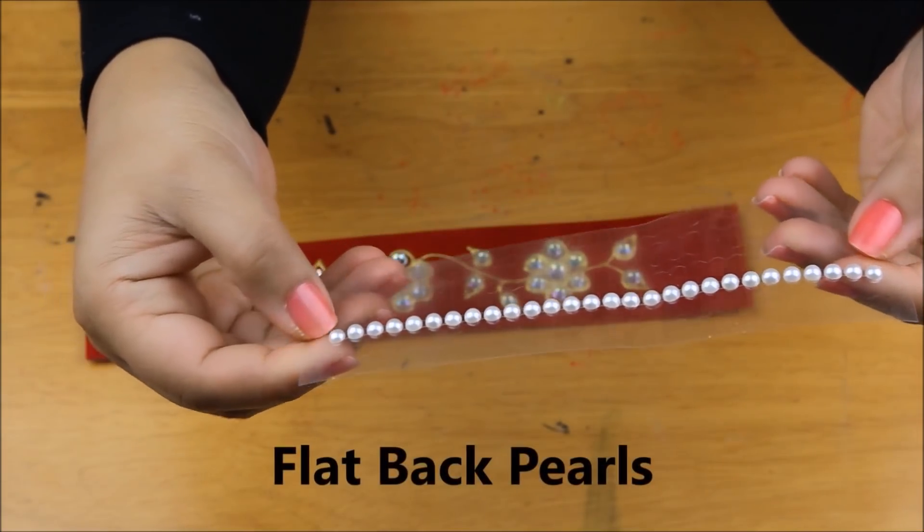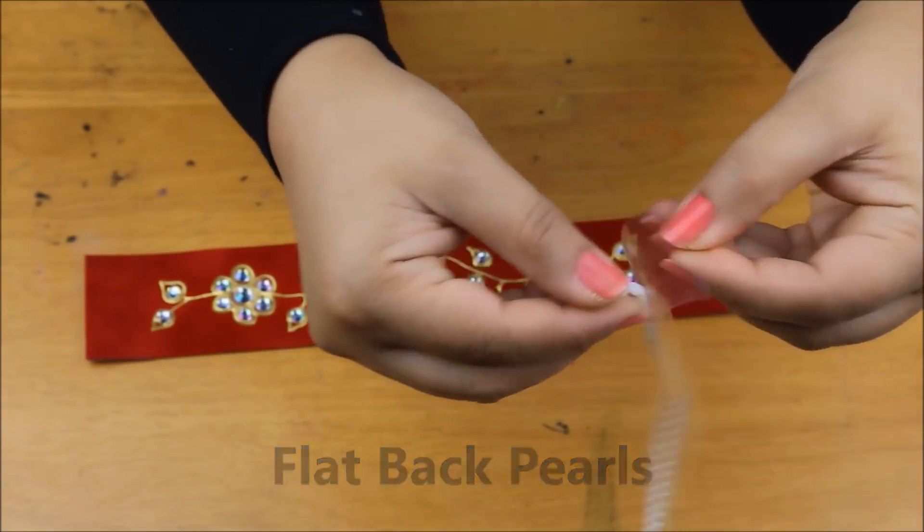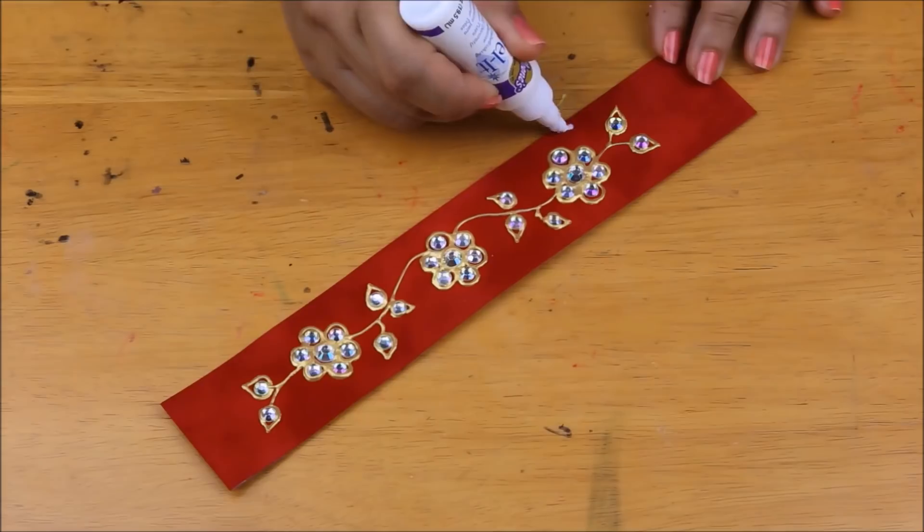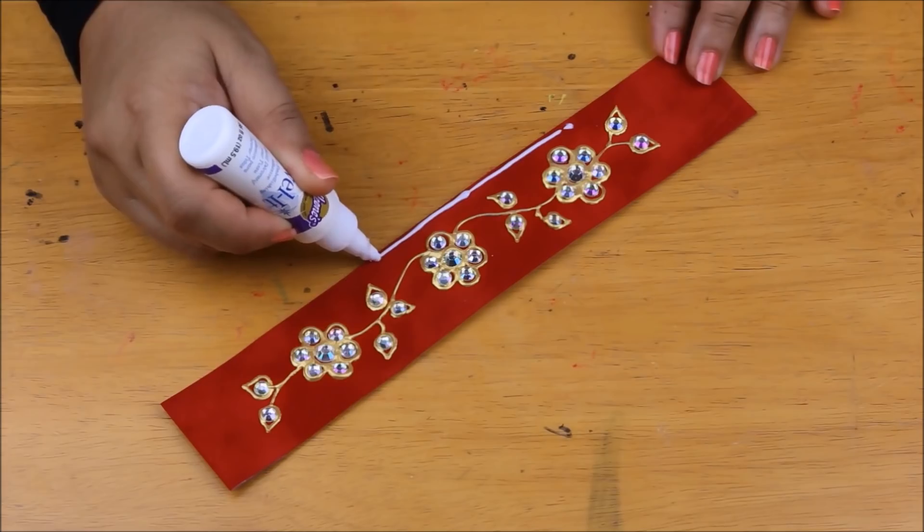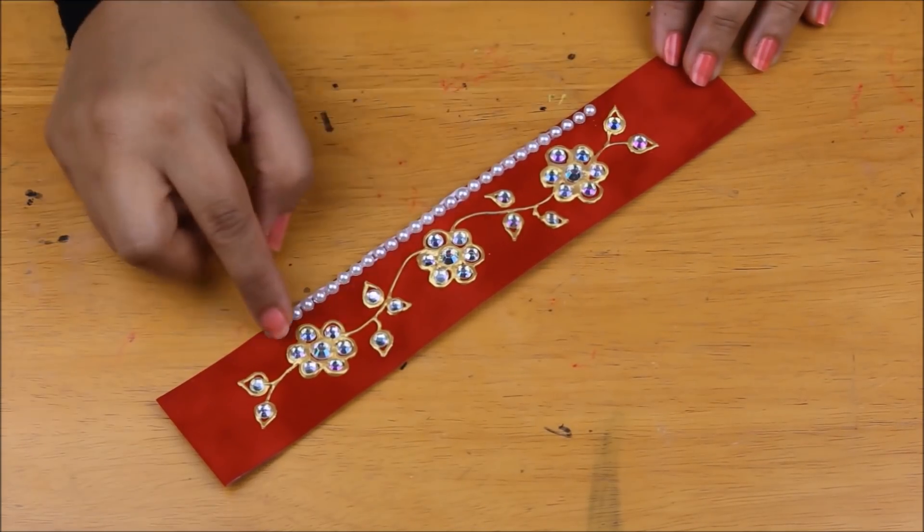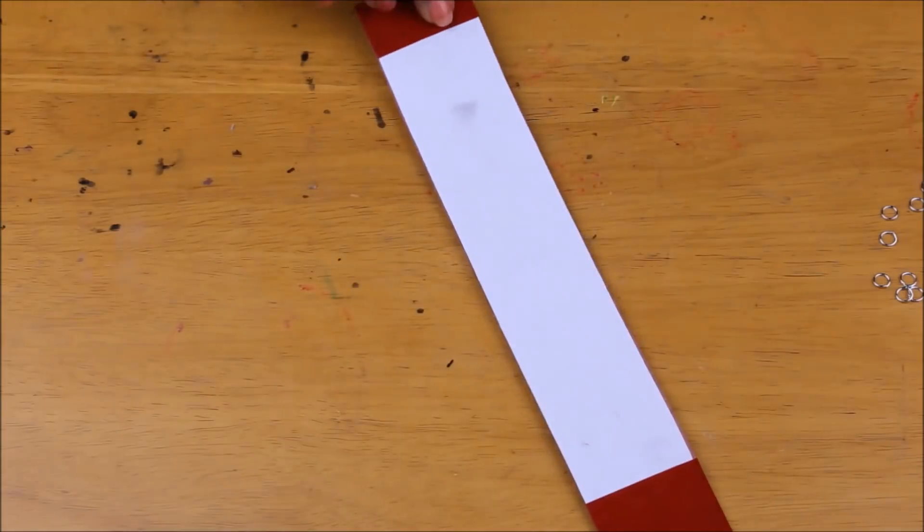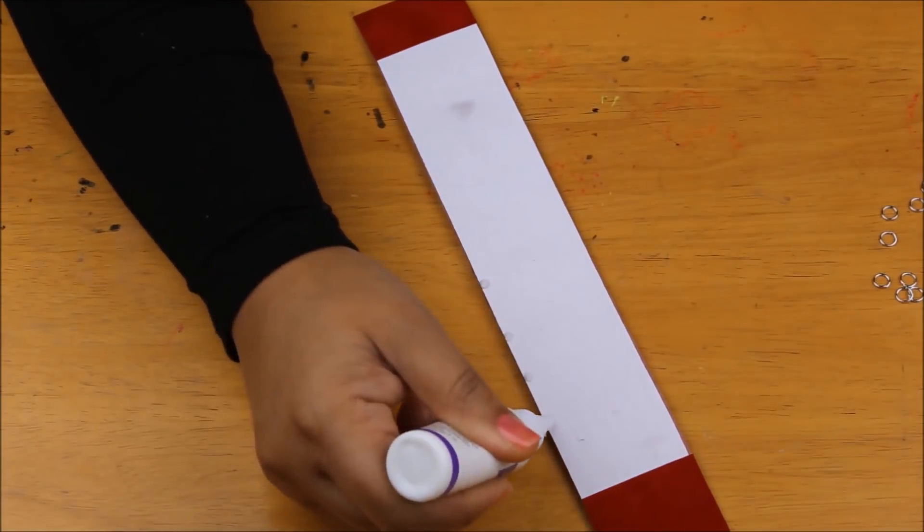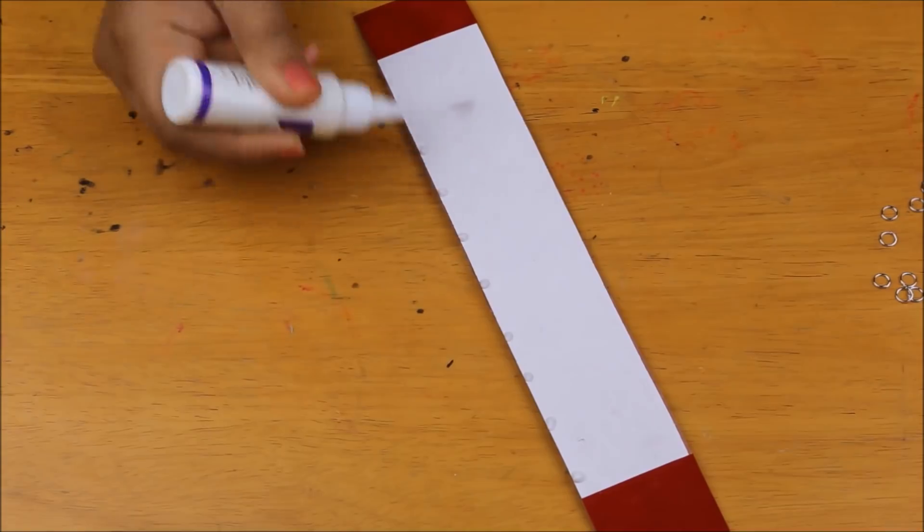Once the paint is dry, I'm going to add a strip of flat pearls right at the bottom of the choker. In the back of the choker, I will be adding some jump rings to attach the pendants that I will be making next.